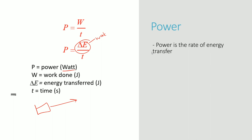Using the same example: 10 newtons of force, 0.5 meters moved. Let's say this happened over a period of 5 seconds. The change in energy, or work, is force times distance: 10 times 0.5 equals 5 joules. Power is the change in energy over the time period: 5 joules divided by 5 seconds gives a power of 1 watt.